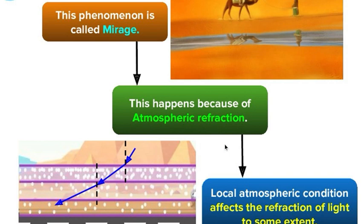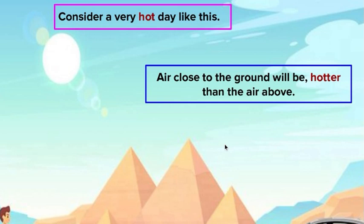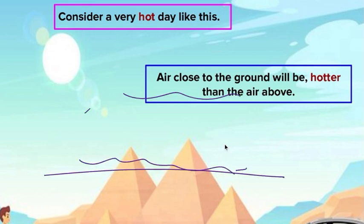That phenomenon is known as mirage. It also happens due to atmospheric refraction because local atmosphere conditions affect refraction. Air near the hot road - the hot surface - is rarer than the air above it. The outer layer is hot, inside is hotter, but nearest to the surface is the hottest. As refractive index keeps on changing, higher from the hot surface, mirage is visible.